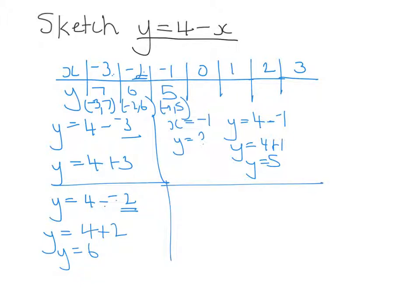Well, what would y be equal to if x was equal to 0? So, if in place of x we put in 0, 4 minus 0 is 4, which would mean when x is equal to 0, y is equal to 4.